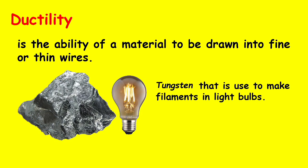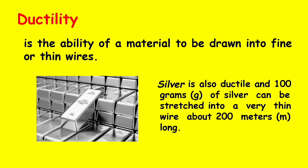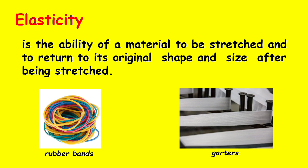Ductility is the ability of a material to be drawn into fine or thin wires. An example is tungsten, which is used to make the filaments in light bulbs. Silver is also ductile — 100 grams of silver can be stretched into a very thin wire about 200 meters long. Elasticity is the ability of a material to be stretched and to return to its original shape and size after being stretched. Examples are rubber bands and garters.